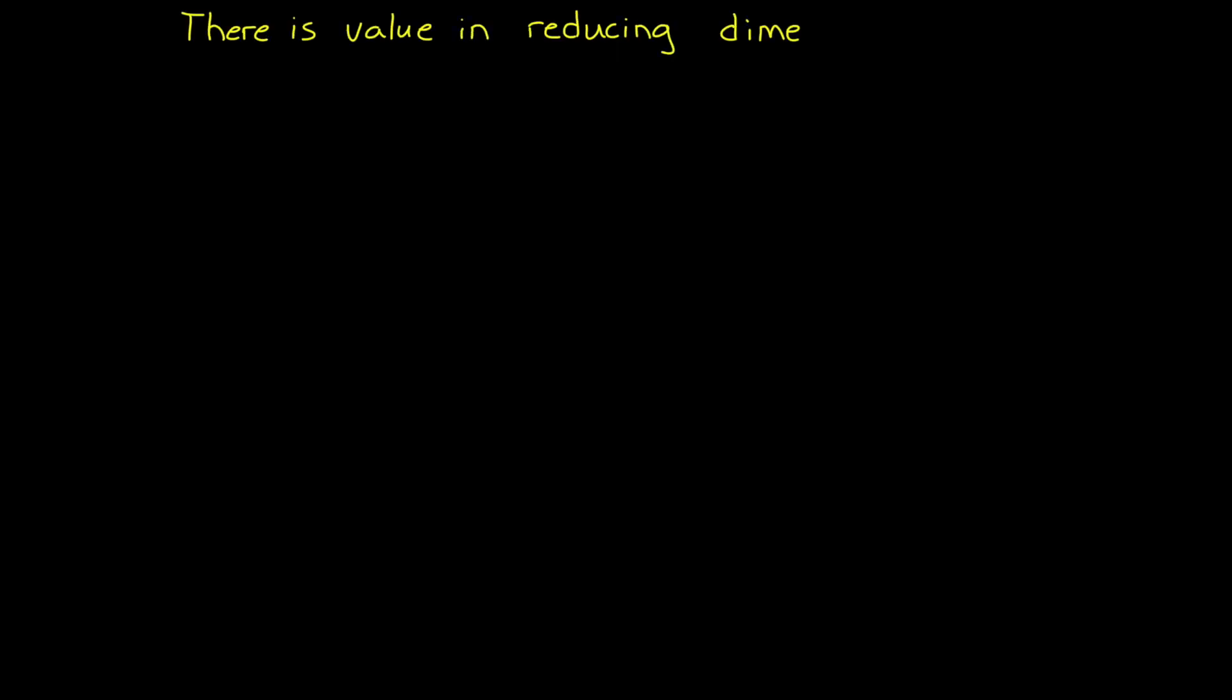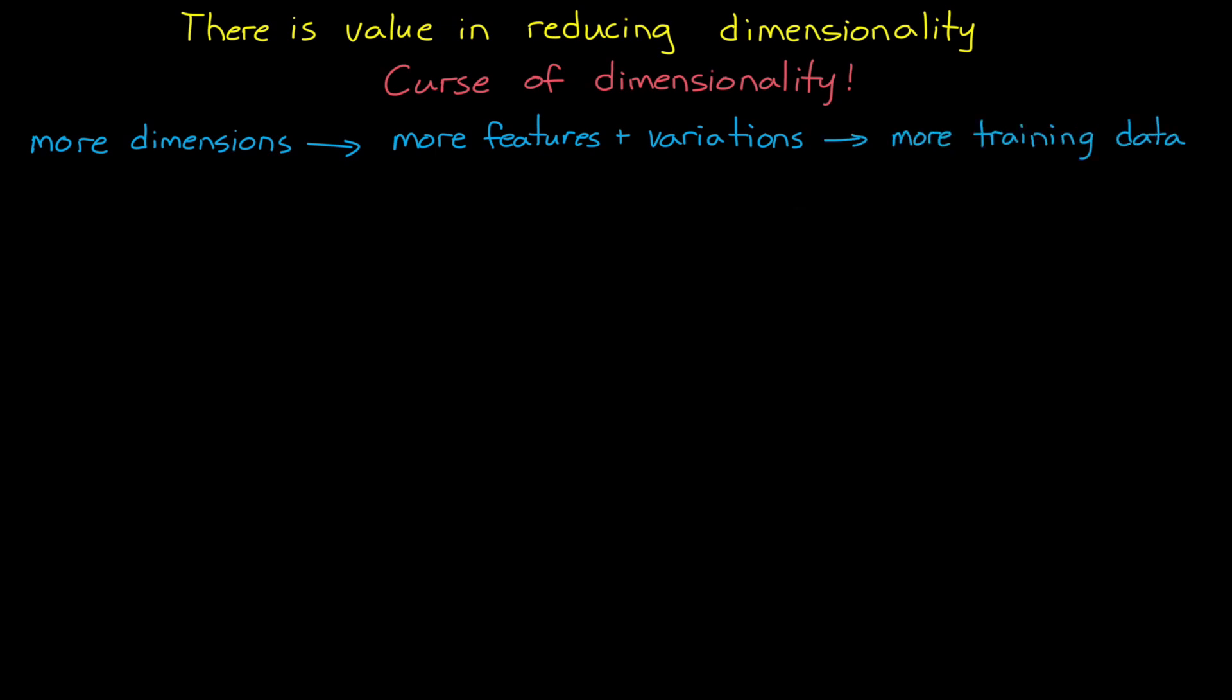But the other benefit of reducing the dimensionality of your data is because of the so-called curse of dimensionality, where more dimensions means more features and variations of each feature, and therefore more training data is needed to cover all possible combinations. So not only is the data itself larger with higher dimensions, but you need more of it to train the network. So overall it takes more network complexity, more data storage, and more time to train.